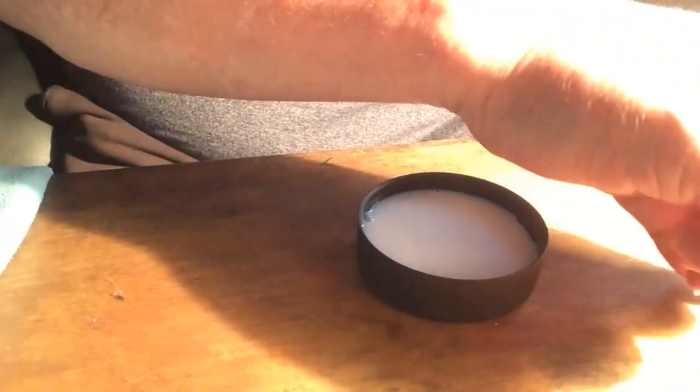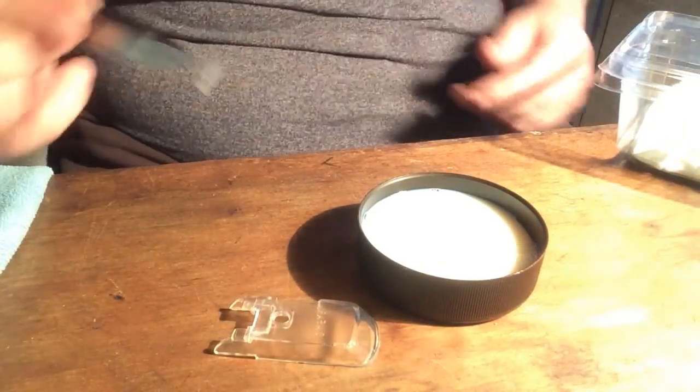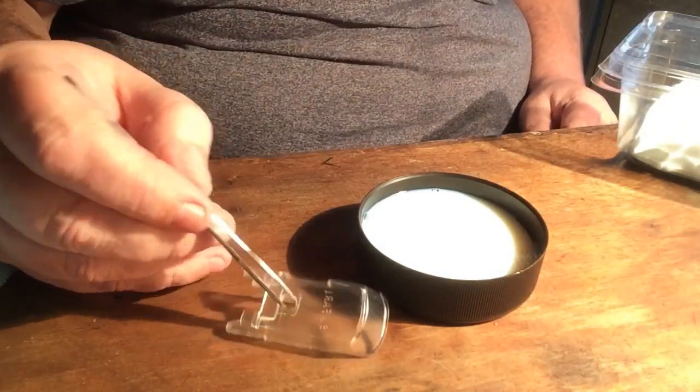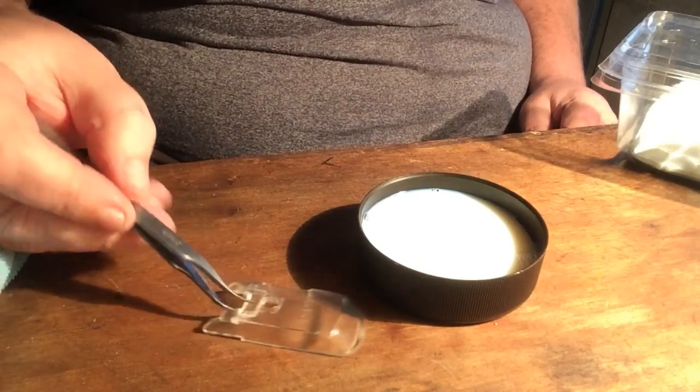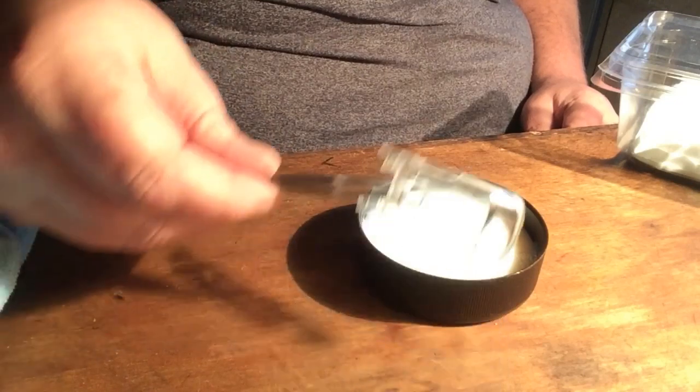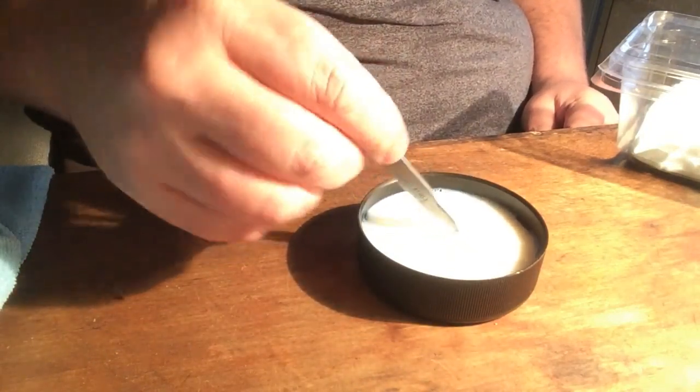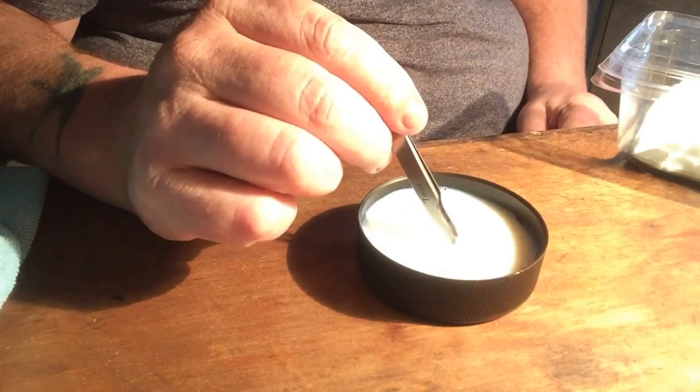You put your screen in there afterwards and it keeps all the dust off so it can cure, it can dry. And all you do, get your tweezers, place it in there, just submerge it, and that's floor polish.